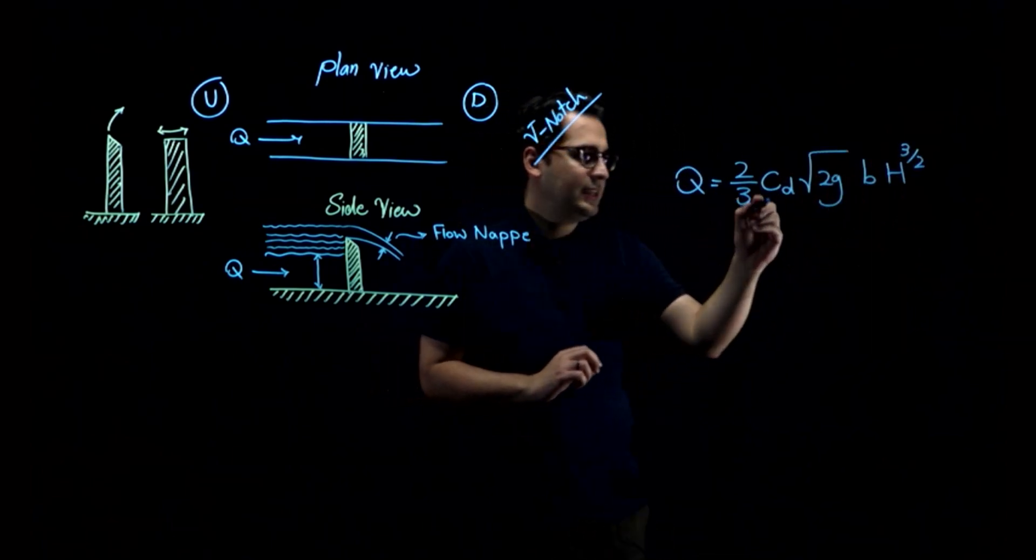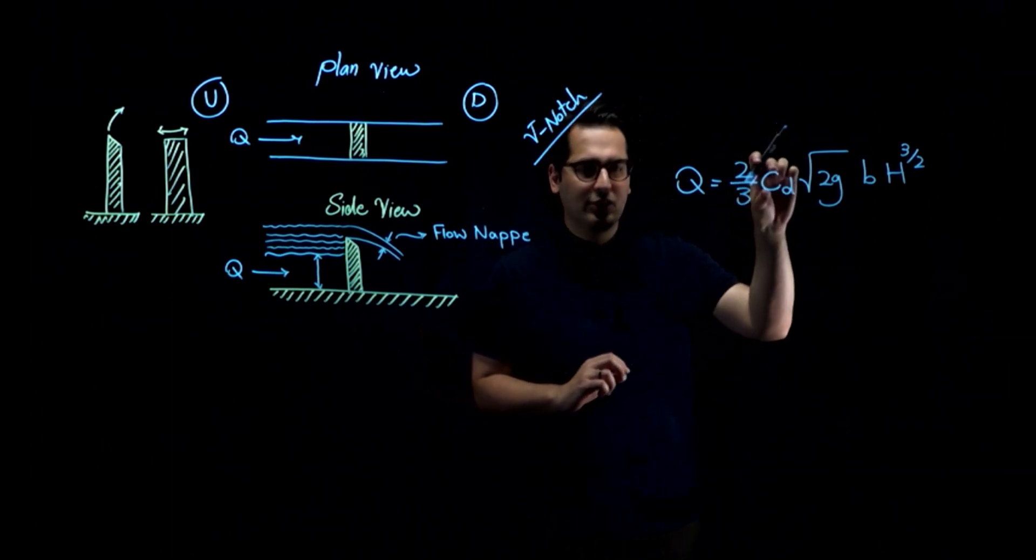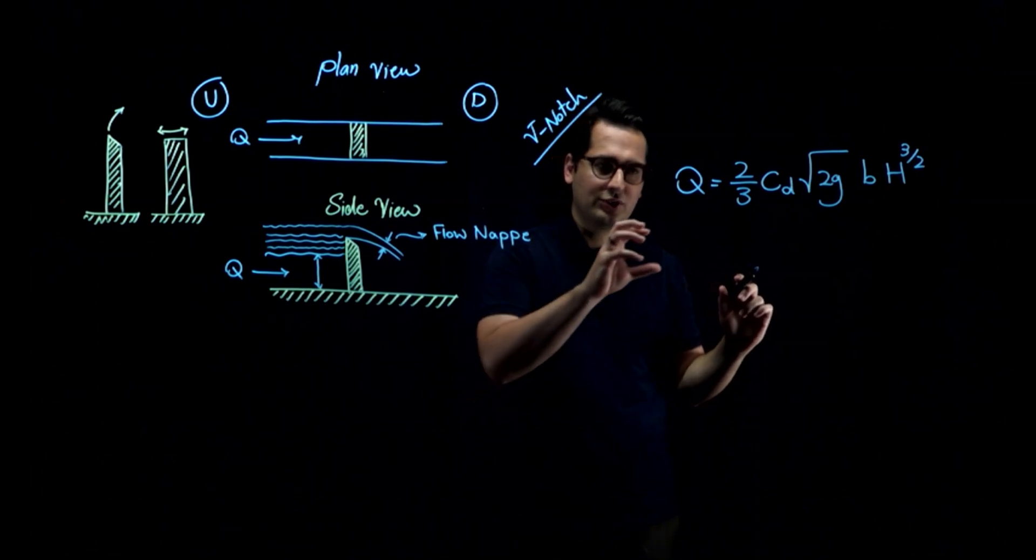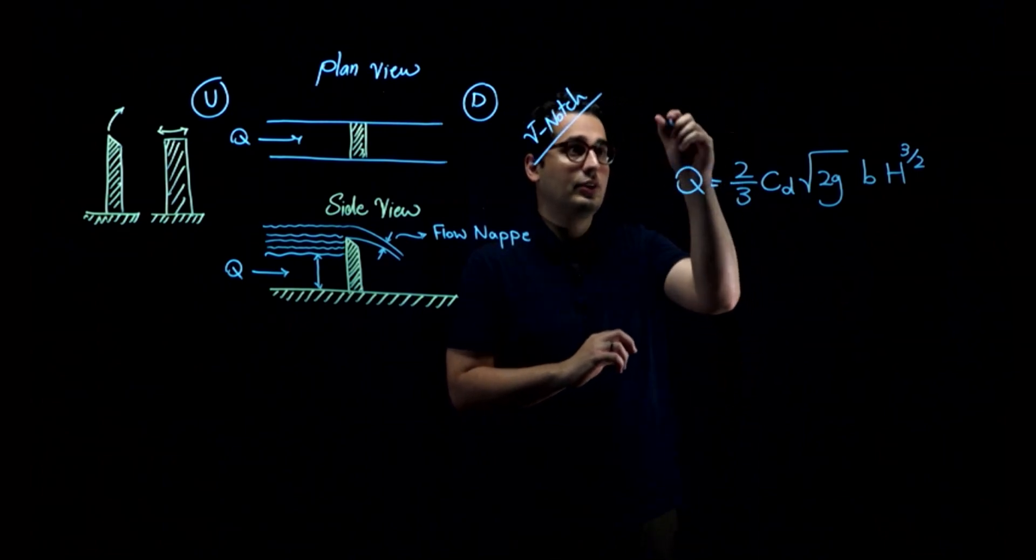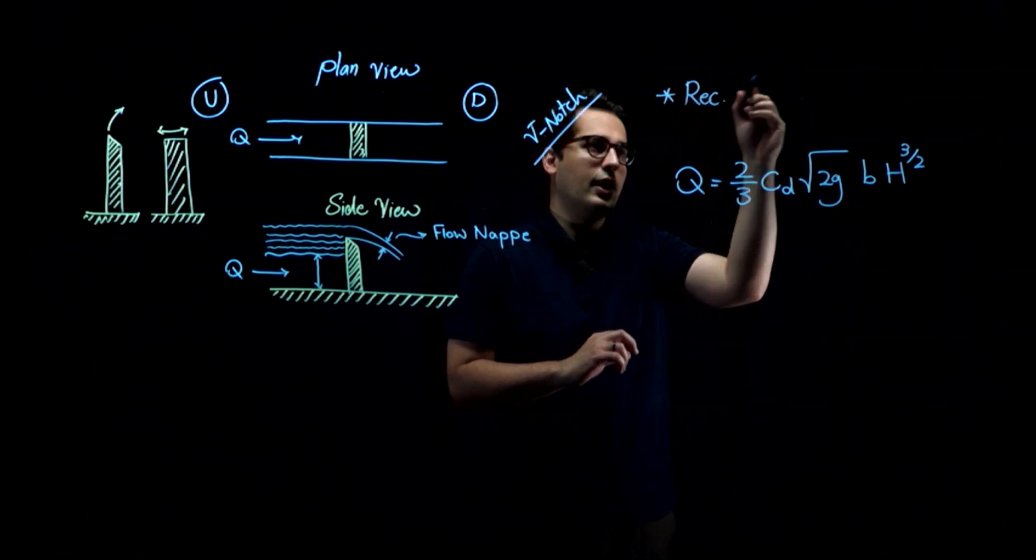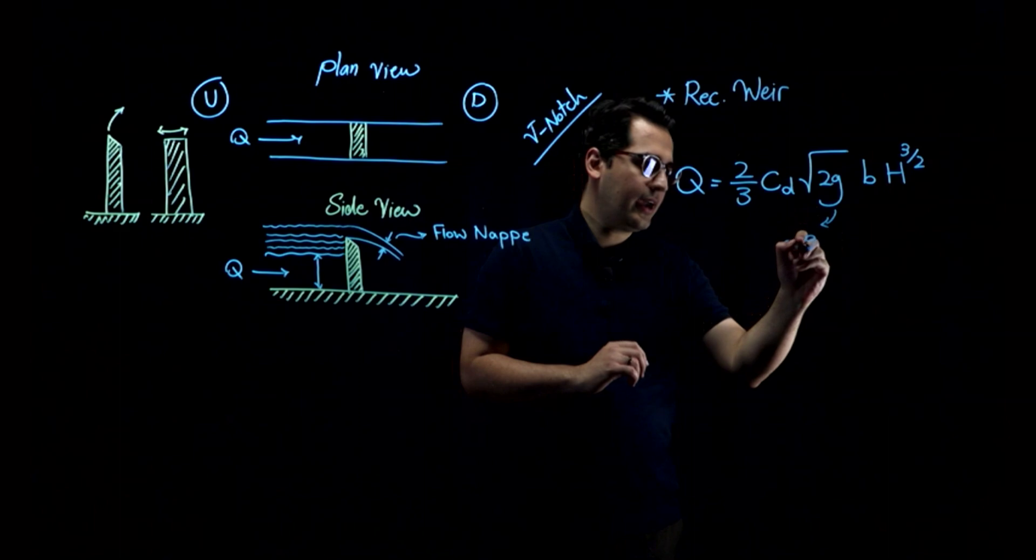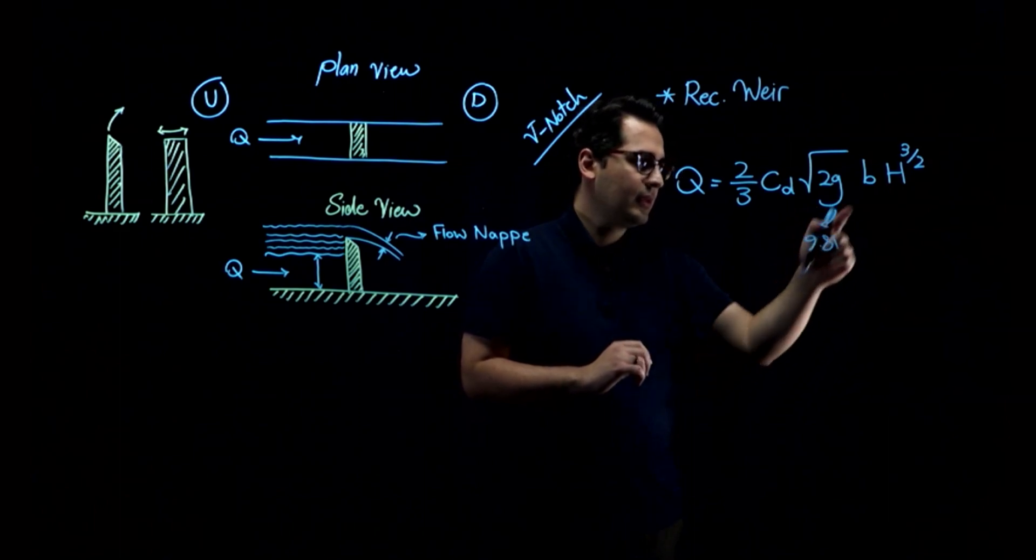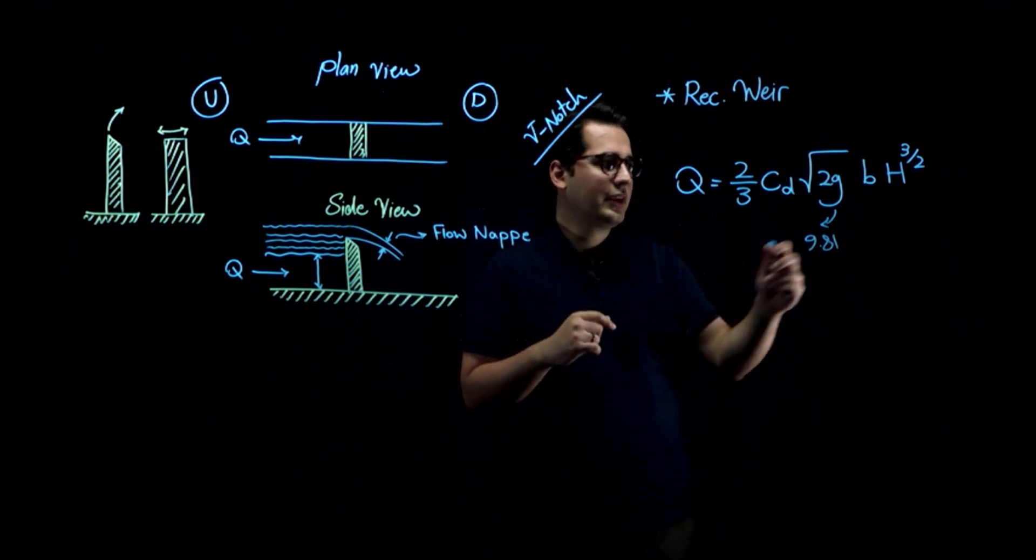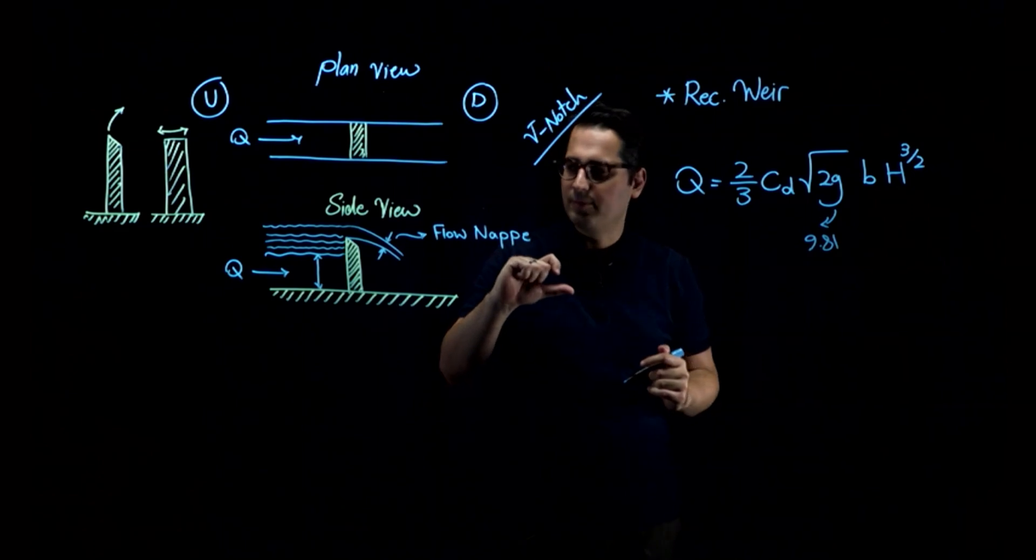CD over here is discharge coefficient. This discharge coefficient varies based on the type of weir that you are considering. This equation is for a sharp-crested rectangular weir. G, in SI is 9.81. B is the opening, the width of the opening of the weir. And H is the depth of water over the weir.